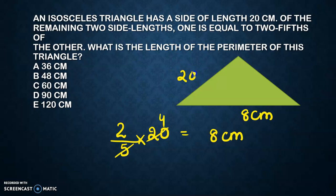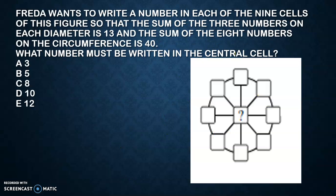This must be this side because these are the equal sides. It has a side length of 20 centimeter, and one of the remaining two sides is two-fifths of the other. So 20 plus 20 plus 8 gives you straightforward 48 centimeter.